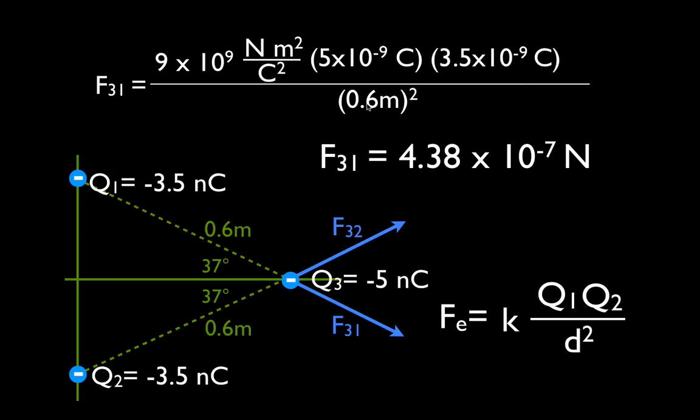Because the distances are the same, the force on Q3 from Q2 is also 4.38×10⁻⁷ newtons. Now we know the directions and the magnitudes of the forces on Q3 from Q1 and Q2, and we can add them up.